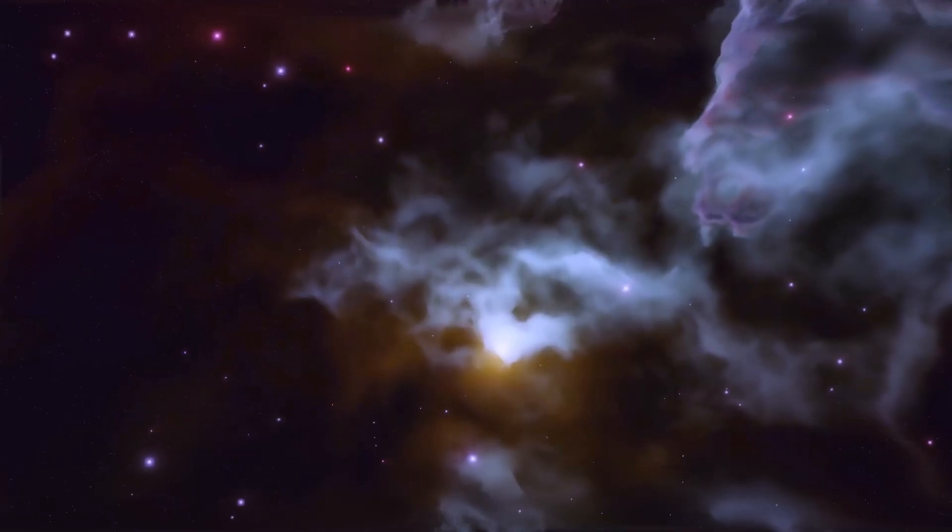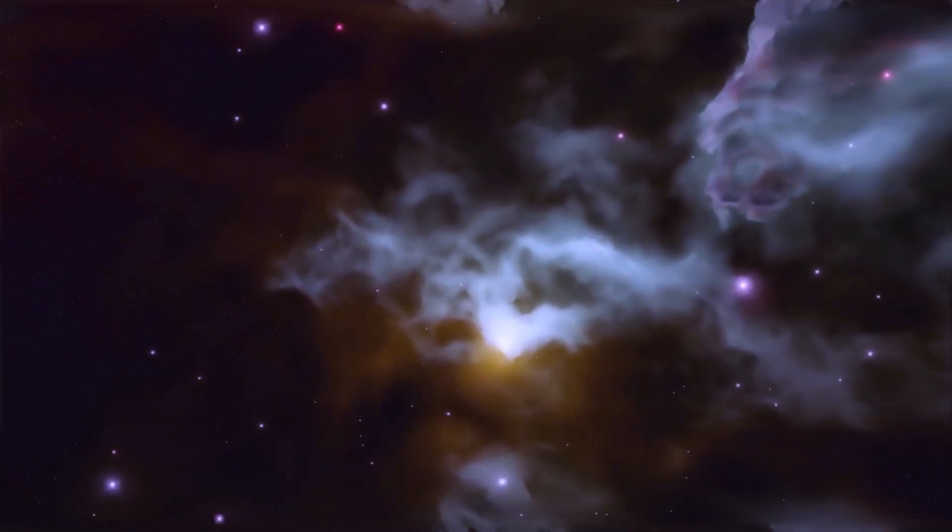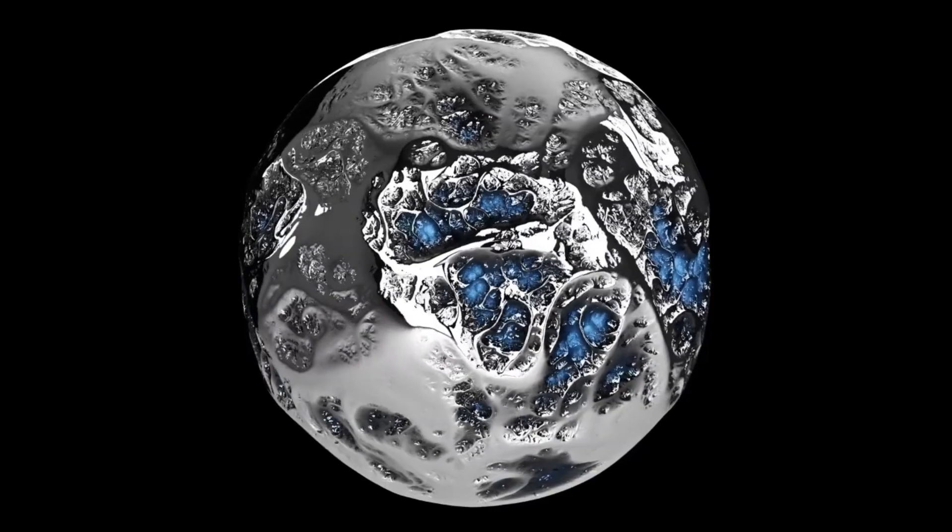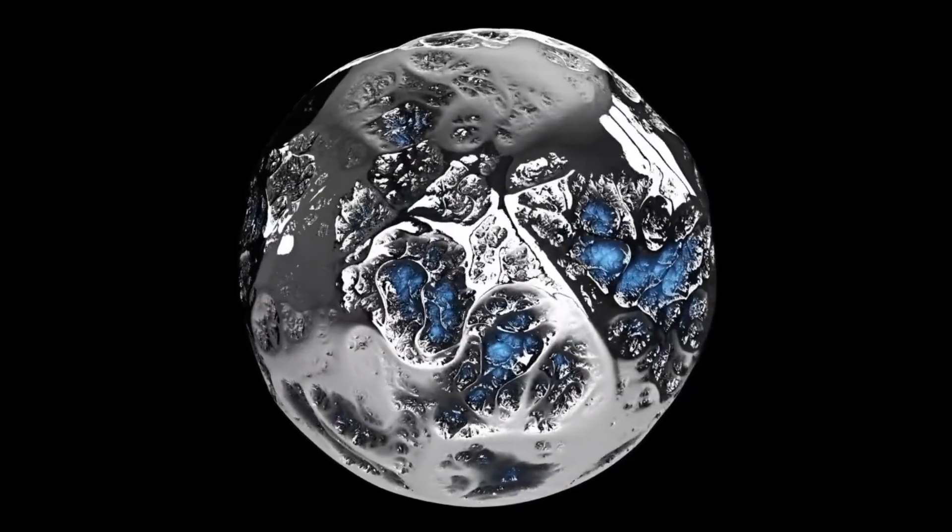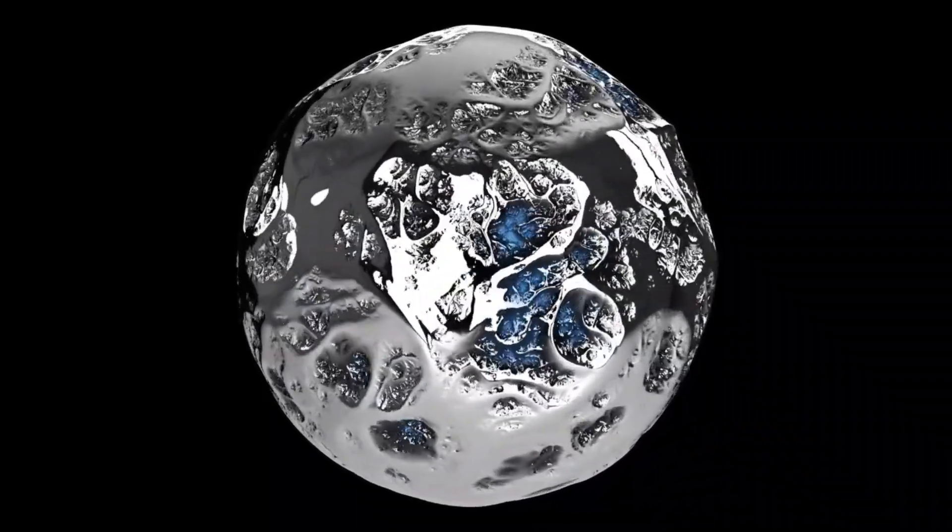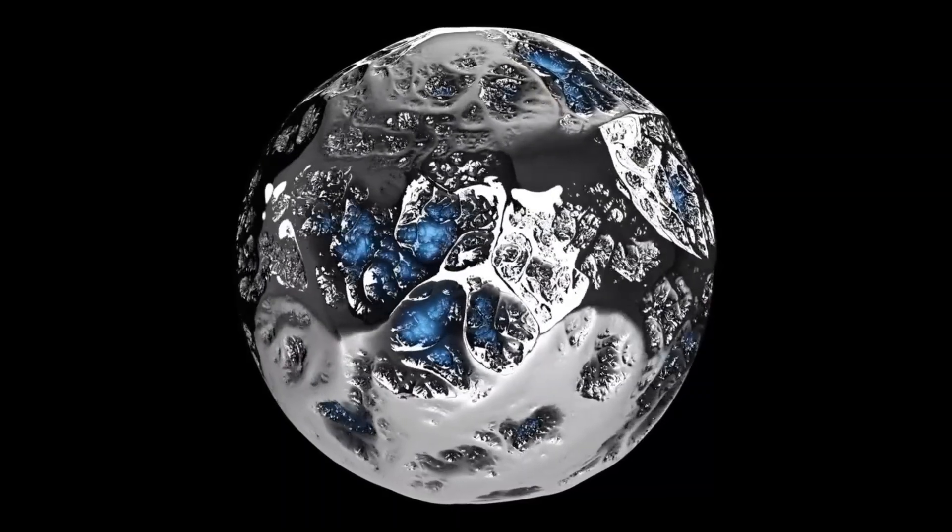Its true scale is staggering. If placed at the center of our solar system, Betelgeuse's outer layers would engulf the orbits of Mercury, Venus, Earth, Mars, and even extend past that of Jupiter. It lies approximately 640 light years away from Earth, a relatively short distance in the vast expanse of the cosmos.